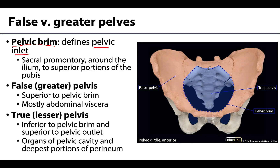The brim is going to start around the sacral promontory, continue along the ilium, and then go along the superior portion of the pubis. This is really important in terms of identifying where the pelvic inlet is going to be located, and it also helps you differentiate and understand the demarcation between the false and the true pelvis.